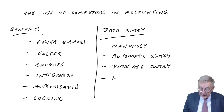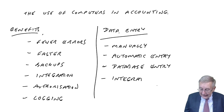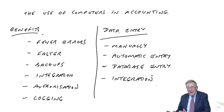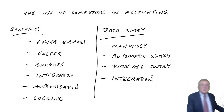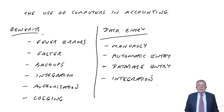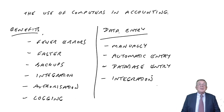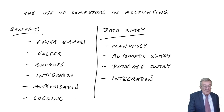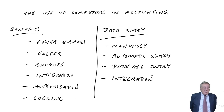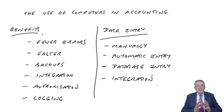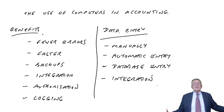Integration in data entry: instead of one person typing an invoice and giving it to another person who types the amount into the accounting software, it can be done automatically — it's all linked. The software used to prepare invoices can automatically transfer the amount to the debits and credits. Finally, a terminology point: Transaction Processing System or Software, called TPS — this is the name given to all the software involved in accounting.